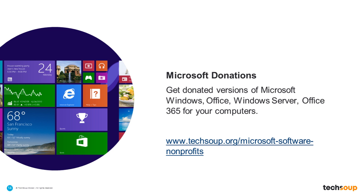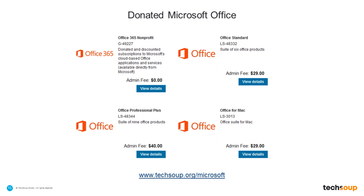Those familiar with the Microsoft donation program can find it at TechSoup.org/Microsoft or just Microsoft Software Nonprofits, where you can get donated Office, Windows, Windows Server, Office 365, and all kinds of things. Almost all products through Microsoft's donation program with TechSoup come with Software Assurance. If you get Office Professional Plus, you get a whole bunch of benefits that the retail market pays hundreds of dollars extra to purchase — and it comes for free with TechSoup donations.